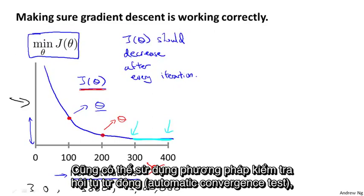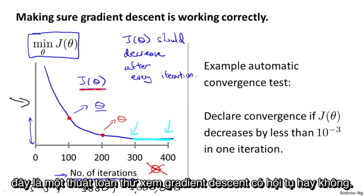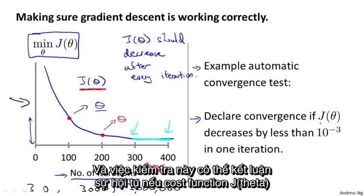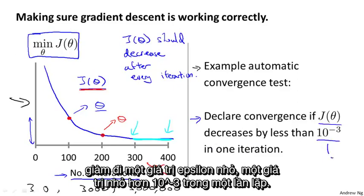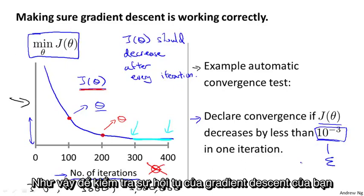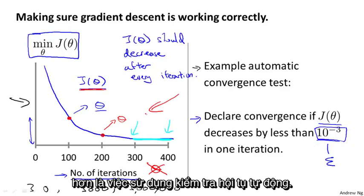It's also possible to come up with automatic convergence tests — an algorithm that tries to tell you if gradient descent has converged. A typical example of an automatic convergence test would declare convergence if your cost function J(θ) decreases by less than some small value epsilon, such as 10 to the minus 3, in one iteration. But I find that usually choosing this threshold is pretty difficult, so I actually tend to look at plots like these rather than rely on an automatic convergence test.